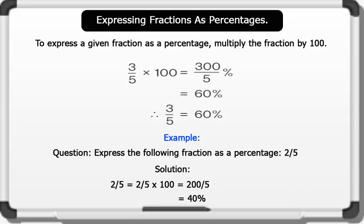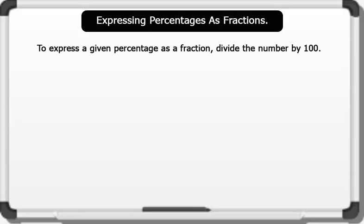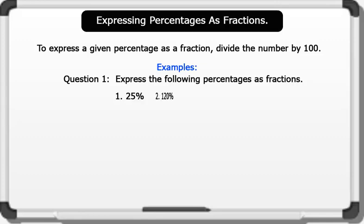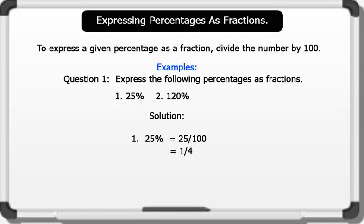Next, let's express percentages as fractions. To express the given percentage as a fraction, divide the number by 100. Let's see an example. Express the following percentages as fractions: 1. 25%  2. 120%. Solution: 1. 25 divided by 100 equals 1 over 4. 2. 120 divided by 100 equals 6 over 5. That's wonderful!